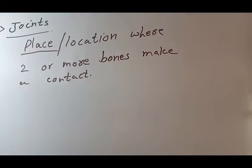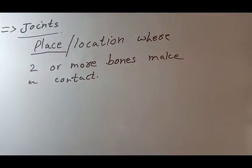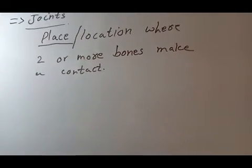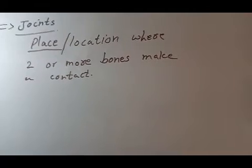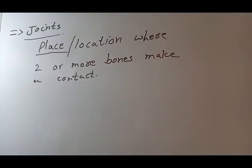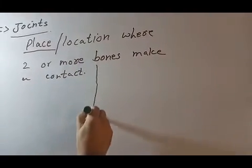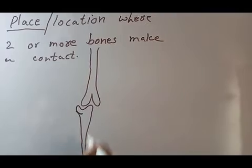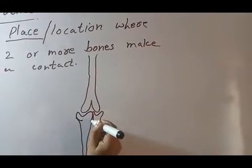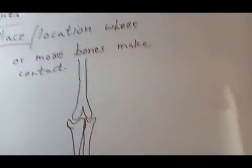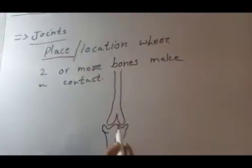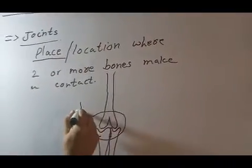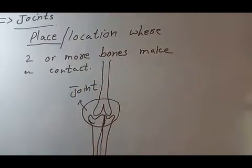The word joint literally means anything which is joining two other things. Joints function as an adhesive and they help bones get attached to each other. For example, this is the bone of the upper arm, and these two are the bones of the lower arm. Both the upper bone and the lower two bones are making contact at this place, so this place is a joint.